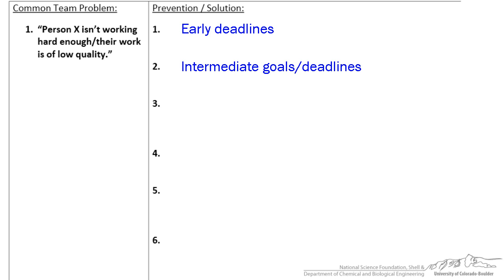Next, set intermediate goals and intermediate deadlines. This means that a section of the project doesn't have to be completely ready before showing it to the rest of the group. Showing progress to the team means that everyone can see the work that everyone else is doing and give feedback. This is actually a useful time saver because a group can catch small mistakes before they become big ones.